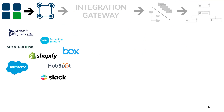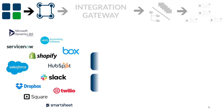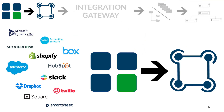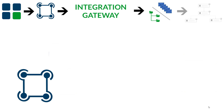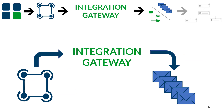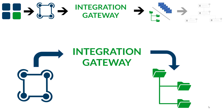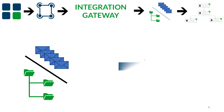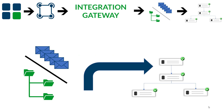Modern cloud-based applications publish changes through webhooks. Integration Gateway works as a hub between webhooks and message queues or file systems. The received webhook messages are posted to a message queue or file system in real-time. Real-time integration is finally achieved by having a listening service that monitors the message queue or file system and pushes the messages to a final destination.